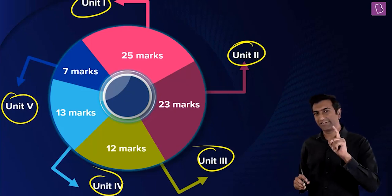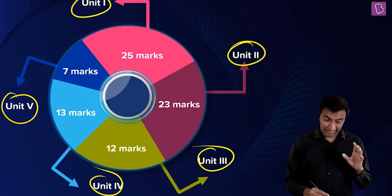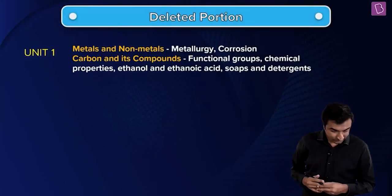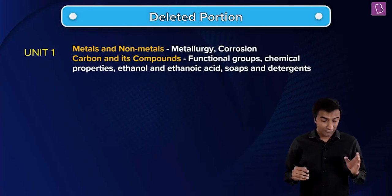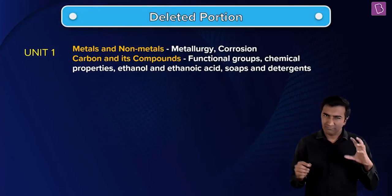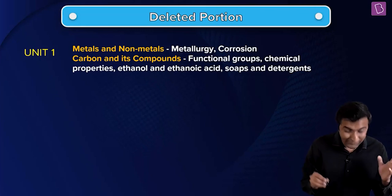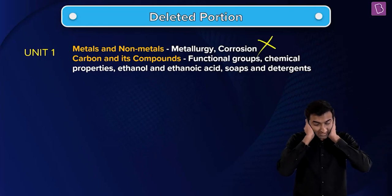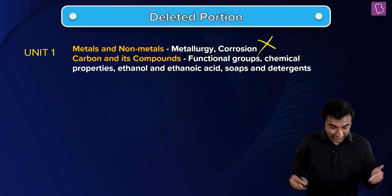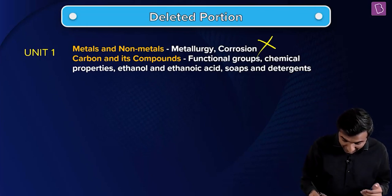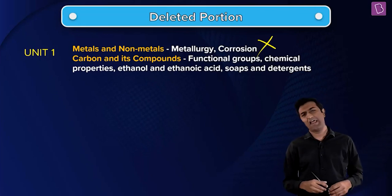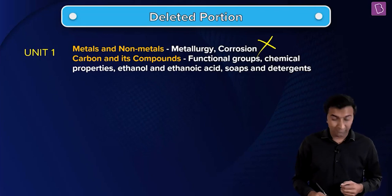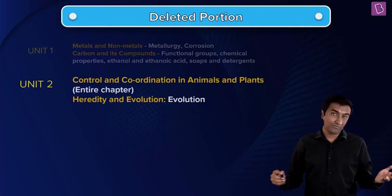Extremely important idea: some portions have been deleted for the current year, 2021. Unit one, which is primarily chemistry, does not have metallurgy, does not have corrosion, and a lot of organic chemistry has been skipped — carbon and its compounds, functional groups, chemical properties, ethanol, ethanoic acid, soaps and detergents.